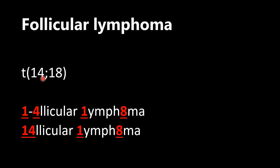Follicular lymphoma is chromosomes 14 and 18. There are two ways to remember this. First, put the 4 in 'follicular' — 'four-licular' — but you have to remember to put the 1 before it to get 14. Then the 'L' in lymphoma is your 1, and the 'O' in lymphoma is an 8, giving you 18. So say it as 'one-follicular lymphoma'. Follicular lymphoma is a translocation between chromosomes 14 and 18.